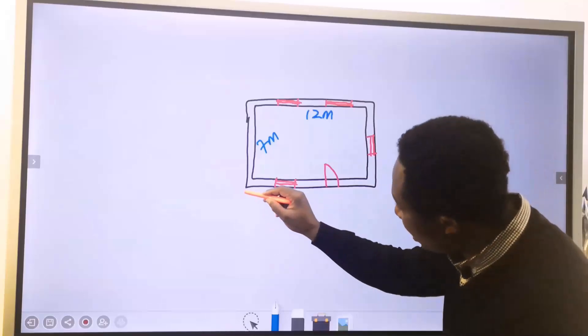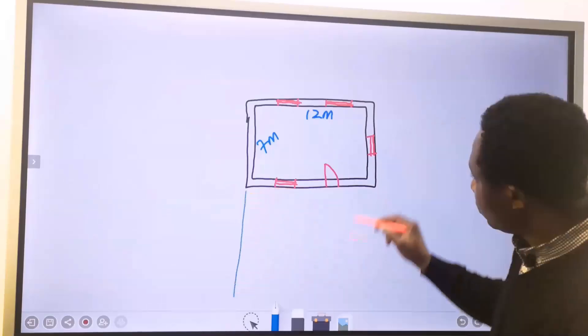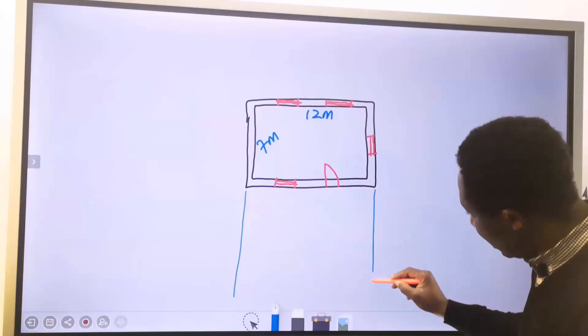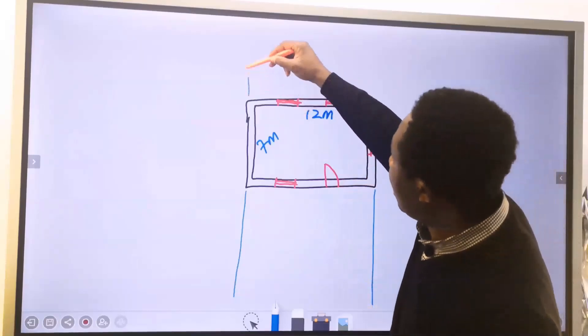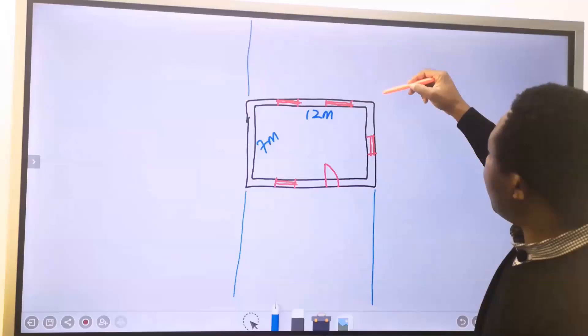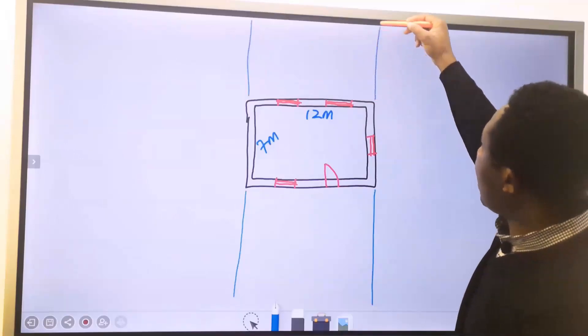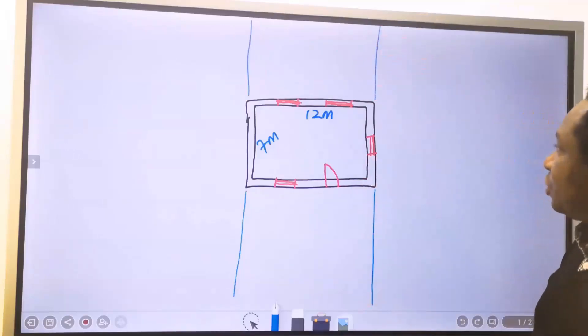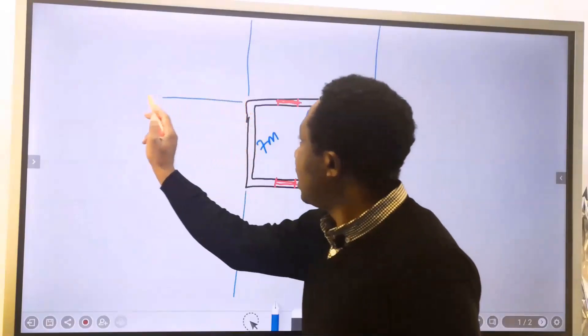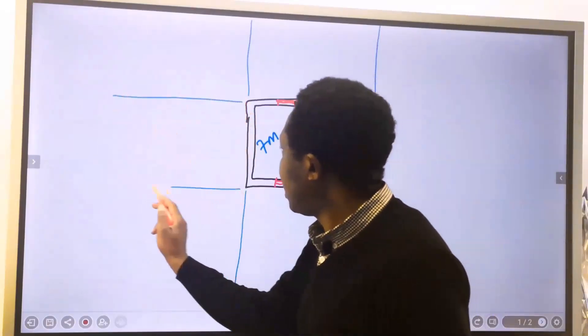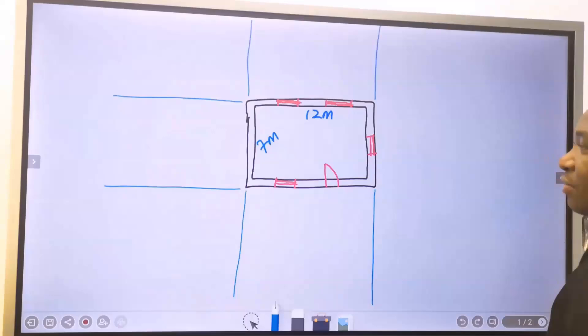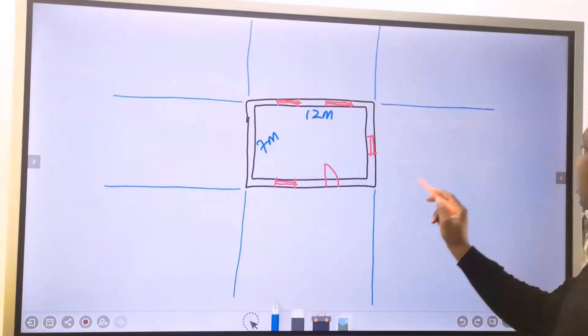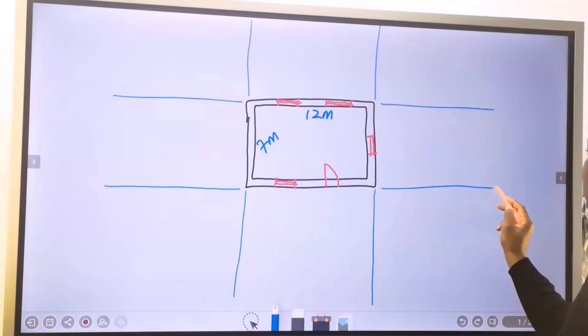With a thin pencil, I will draw a line like this and a line like this. Next, I will draw a line like this for the back and a line like this for the back elevation. I will draw a line like this and a line like this for the left elevation. I will draw a line like this and a line like this for the right elevation.